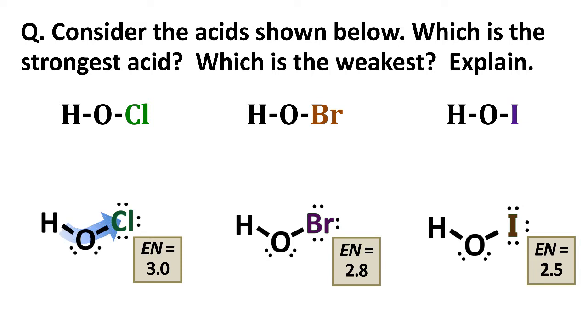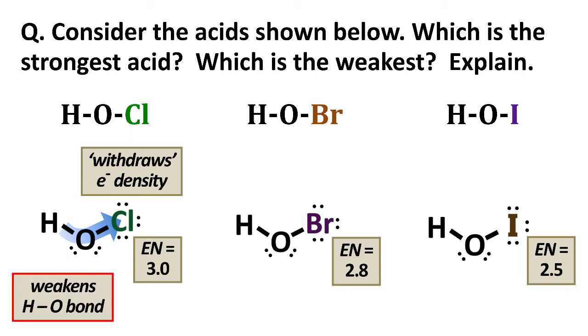And what chlorine does, because it's reasonably electronegative, is it pulls or withdraws some electron density from another part of the molecule, specifically the electron density between hydrogen and oxygen that makes that bond. And by withdrawing some electron density, it weakens that HO bond. And of course weakening the HO bond makes the acid stronger.